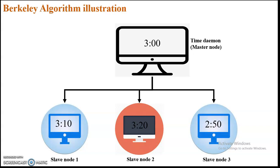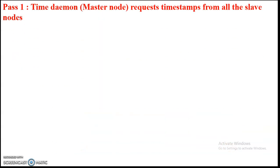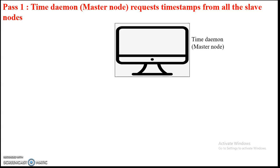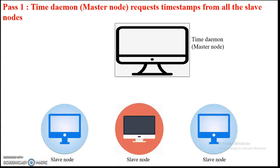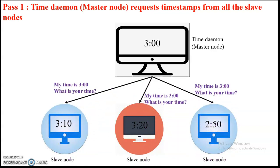Now, if different nodes have different times, communication becomes a problem because there is no synchronization. For communication, there is a basic requirement that all nodes should be synchronized among themselves. In Berkeley's algorithm, the first step — the first pass — is that the time daemon (master node) requests the timestamps from all slave nodes connected in the network.